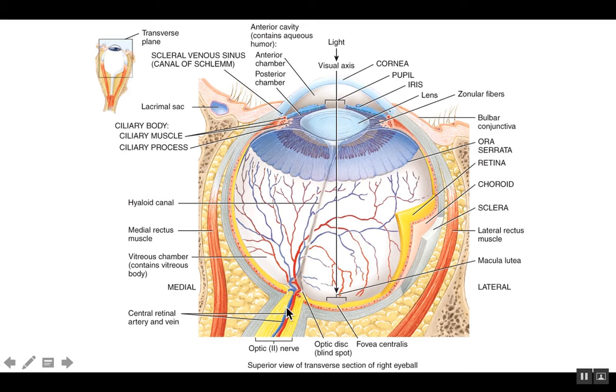We know it's the right eye because the optic nerve will be angled medially as it's going to cross with the other eye. Obviously, the optic nerve would not be angled laterally because it would go outside of the head. So this is the right eyeball.